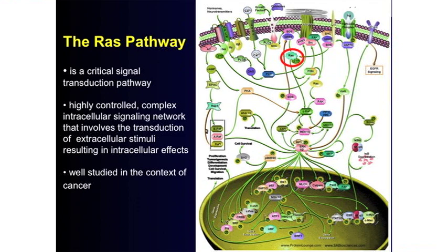The Ras pathway is a signal transduction pathway. This is actually a very simple diagram of the pathway, but it's incredibly complex with a lot of crosstalk and interaction. The bottom line is its job is to get a signal from the outside of a cell — because our cells need to know what they're supposed to do — and transduce that signal all the way to the nucleus, so the nucleus knows what it's supposed to do.